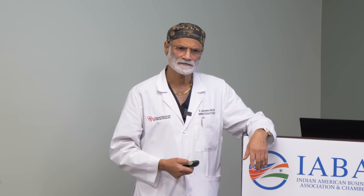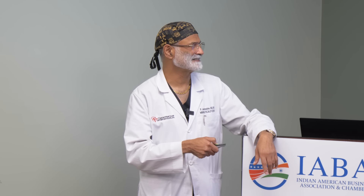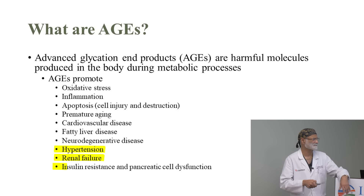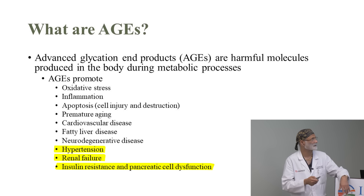Neurodegenerative disease — there it is. If you want to get Parkinson's or dementia, stuff yourself with polyunsaturated fats. Hypertension, renal failure, insulin resistance, and pancreatic dysfunction — all these are caused by advanced glycation end products. They promote mitochondrial dysfunction.